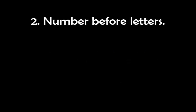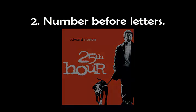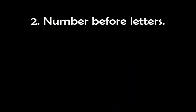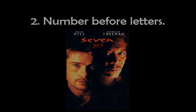The next rule is that numbers come before letters. This only applies for Arabic numbers like 1 and 25, not numbers that are spelled out. If you are looking for the movie Seven, that will be in the S's.